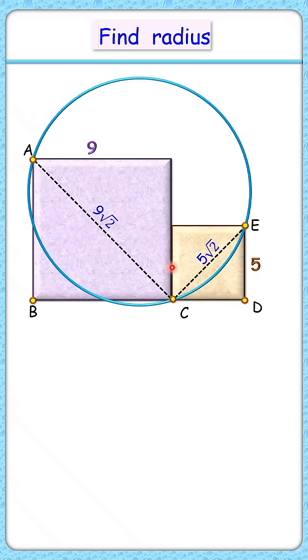In a square we know diagonal and the side makes an angle of 45 degrees and thus this angle also will be 45 degrees, or the complete angle at point C will be 90 degrees. Let's join AE here.